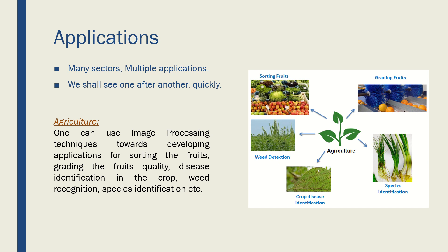This one has apple, that one has orange, etc. When it comes to the farming field, weed detection is one of the very important areas where image processing can really be helpful. Species identification is another area where researchers are working at a very high intensity. The most important area is crop disease identification — when a crop gets some disease, we can compare recorded data with the current image and find out what kind of disease it could be.